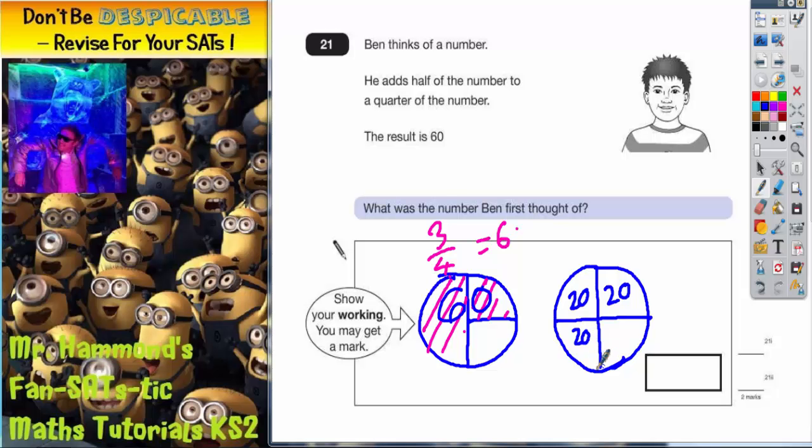Because you can see three quarters is still worth 60. Three quarters is equal to 60 there because it's 20, 20, and 20.